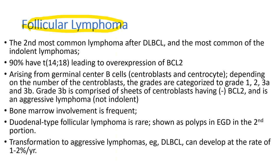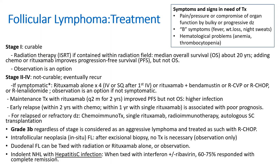Follicular lymphoma is the second most common lymphoma overall, but it is the most common indolent lymphoma. 90% have translocation 14;18, leading to overexpression of BCL-2. Follicular lymphoma has three grades — grade 1, 2, and 3 — and grade 3 is subdivided into 3A and 3B. Grade 3B is considered an aggressive lymphoma and treated as such. Stage 1 follicular lymphoma is curable with radiation therapy; observation is also an option.